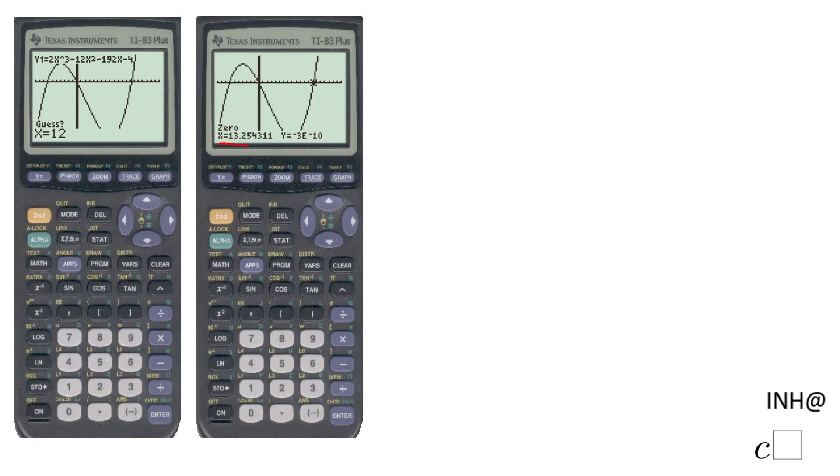So I guess 12, and then I'm going to click Enter, and you get the zero which is x equals 13.25. If you look to this y, this is zero. It's negative 3 times 10 to the power of negative 10. That is the notation this calculator is using.